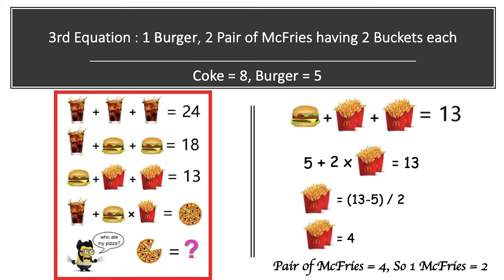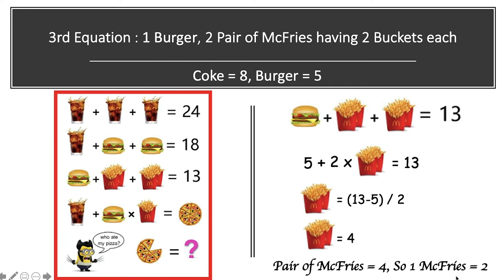In the third equation we have one burger plus two pairs of mac fries, each having two buckets, whose sum is equal to 13. Substituting the burger value: 5 + 2 × (pair of mac fries) = 13, so pair of mac fries = (13 − 5) ÷ 2 = 4. Therefore one mac fry = 4 ÷ 2 = 2.